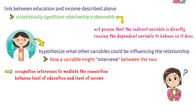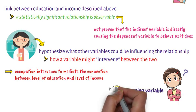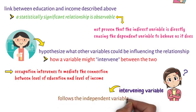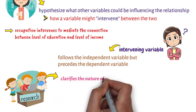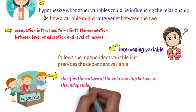Thinking causally, the intervening variable follows the independent variable but precedes the dependent variable. From a research standpoint, it clarifies the nature of the relationship between the independent and dependent variables.